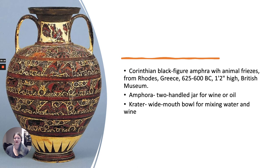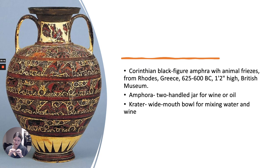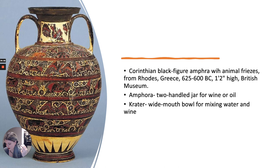These animals are very stylized. This is categorized as an orientalizing style — it takes influence from the Near East, from Persia and the Fertile Crescent area. The reason it's categorized that way is some of these creatures include Lamassu — which we discussed when talking about the Fertile Crescent — as well as sphinxes and sirens, the bird-woman creature with a bird body and a woman's head. These are all mythological creatures associated with the Orient, which is why it's called the orientalizing style.